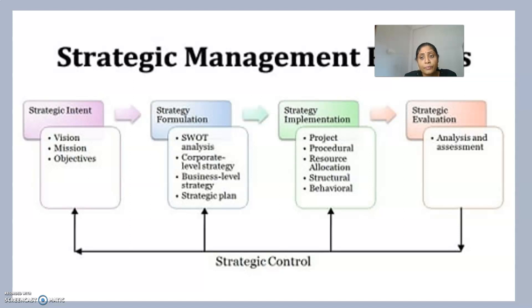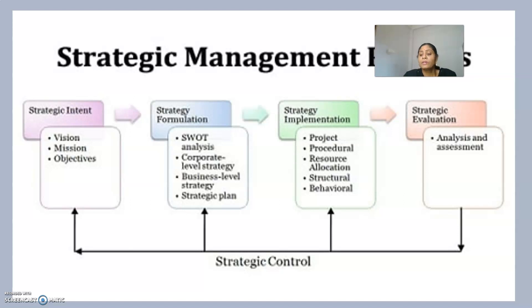In unit 3, we discussed strategy formulation and the different matrices that organizations exercise. Finally, we are now in the fourth component, which is the last component in the strategic management process: strategic evaluation and control.